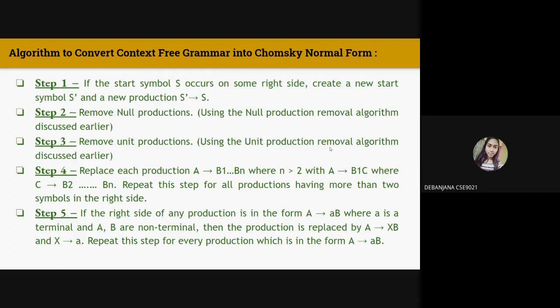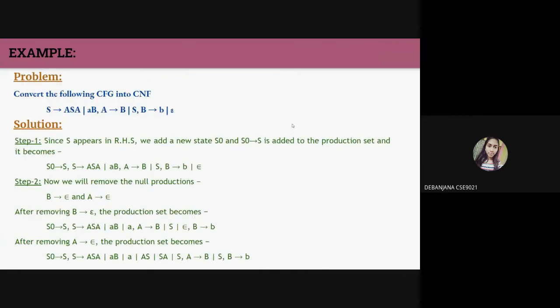The algorithm to convert a CFG into Chomsky Normal Form has five steps. Step one: check if the start symbol S occurs on the right-hand side; if so, define a new production rule S' → S. Steps two and three: remove all null and unit productions. Step four: check for any productions having more than two symbols on the right-hand side and replace them. Step five: check for any production of the form A → aB (a terminal followed by a non-terminal) and replace it.